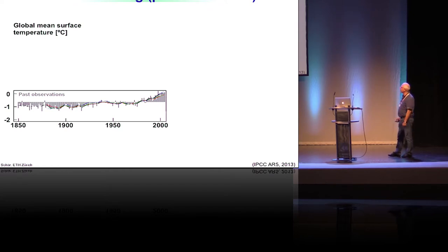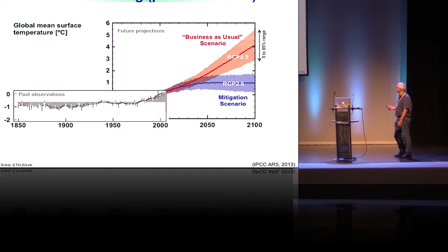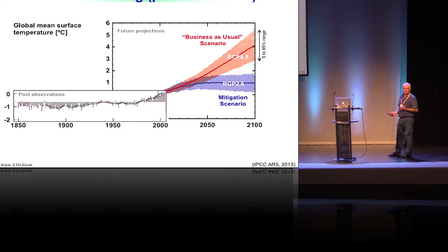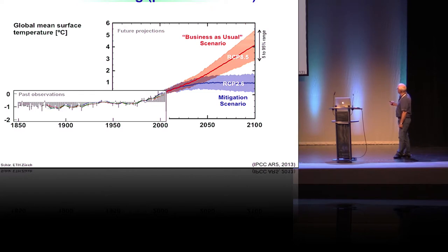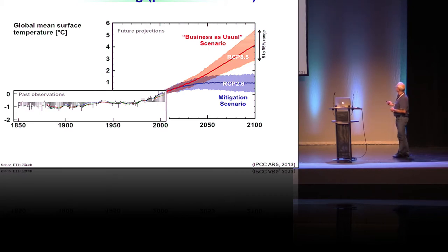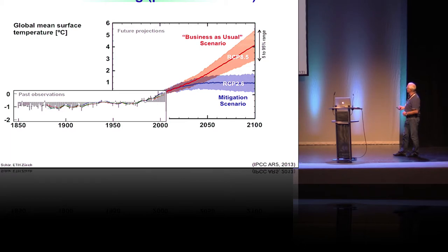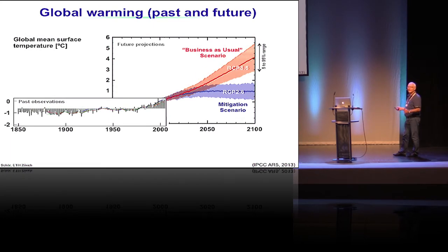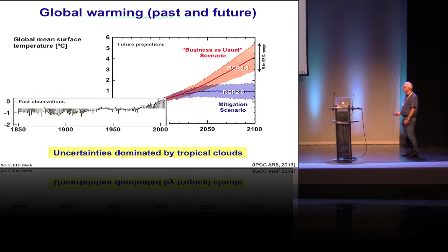What I show you here is that global warming is very sensitive and very uncertain, and there are two uncertainties. One I would call the political uncertainty, namely which of the future scenarios we pick - whether it is a heavy mitigation scenario or a business-as-usual scenario. The second one is a scientific uncertainty: within each scenario there are a lot of uncertainties, roughly a factor of two in global mean surface temperature, and a lot of that uncertainty is dominated by tropical clouds.